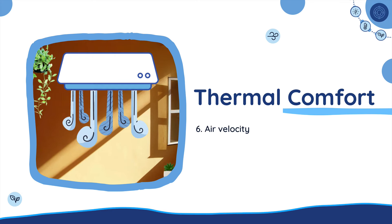The final factor is number six: air velocity. Air velocity describes the speed of air moving past a person. No air movement can make a room feel really stuffy. On warm days, air movement helps to keep us cool, but on cold days, too much air movement can feel like a cold draft. When planning for thermal comfort of a space, we need to make sure that the air velocity is consistent, which will help us optimise the air quality of the space.